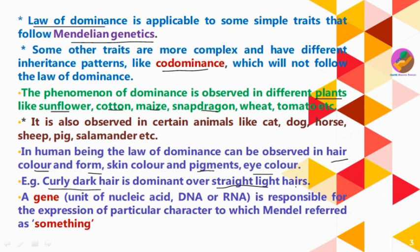Mendel knew that there is something responsible for the expression of all these characters. Nowadays it is known as a gene — the unit of nucleic acid, that is DNA or RNA. At that time, Mendel did not use the term gene; he referred to it as something else. He did not use the term gene, but these are all the facts about the Law of Dominance.